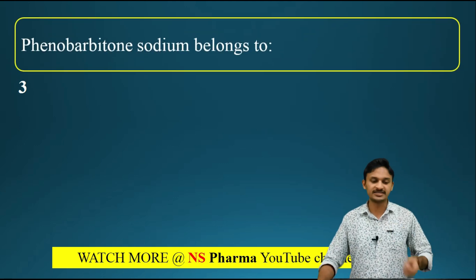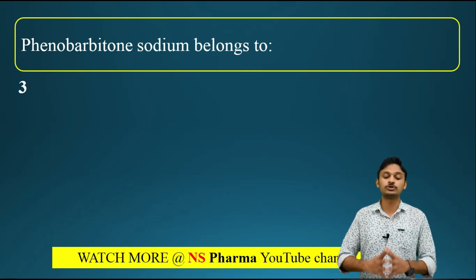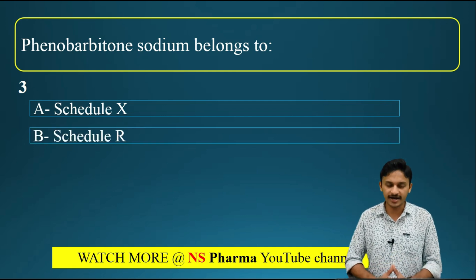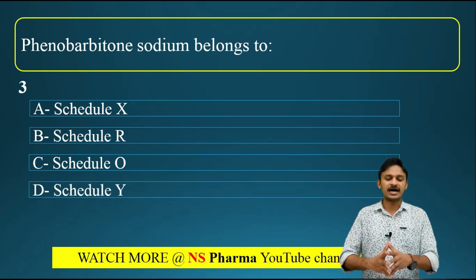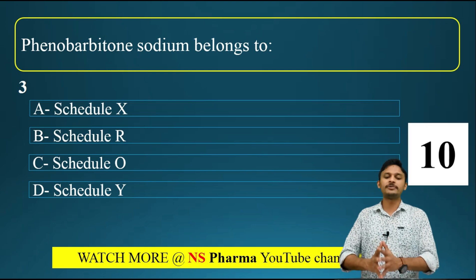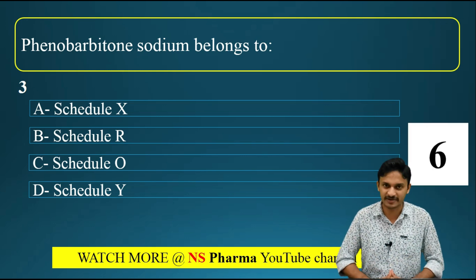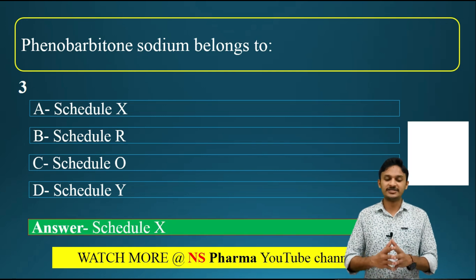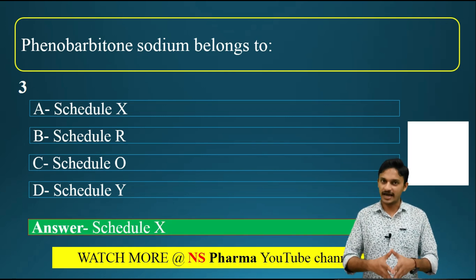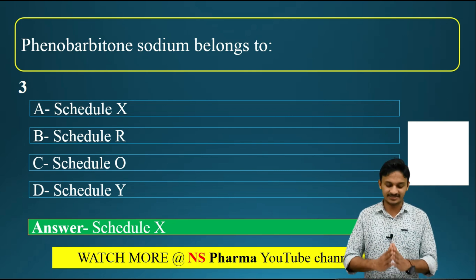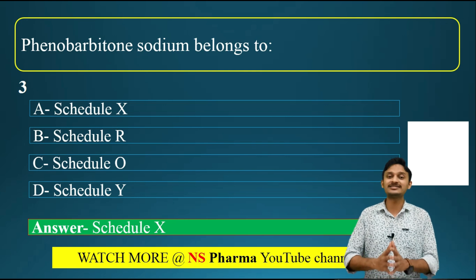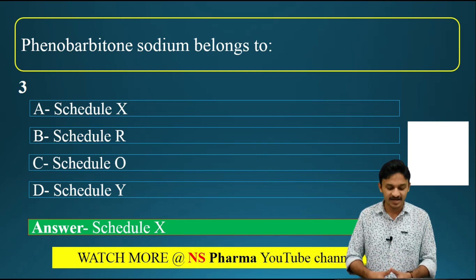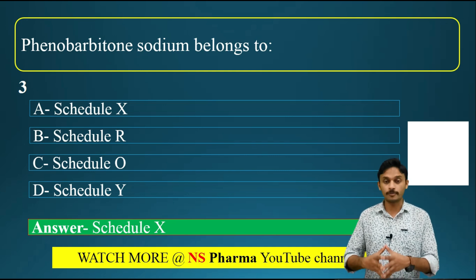Question number three: phenobarbitone sodium belongs to which schedule? Options are: option A - Schedule X, option B - Schedule R, option C - Schedule O, option D - Schedule Y, according to the Drugs and Cosmetics Act. The correct answer is option A - Schedule X. Schedule X is the list of narcotic drugs and psychotropic substances according to the Drugs and Cosmetics Act.